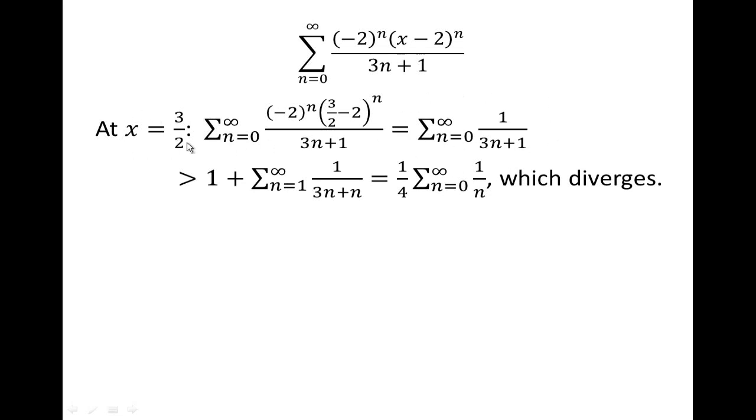What about 5 halves? 5 halves is actually kind of fun. Because 5 halves minus 2 is going to be 1 half to the n times negative 2 to the n, leaves us with negative 1 to the nth.